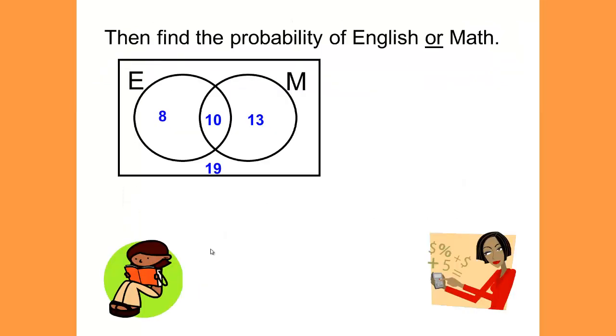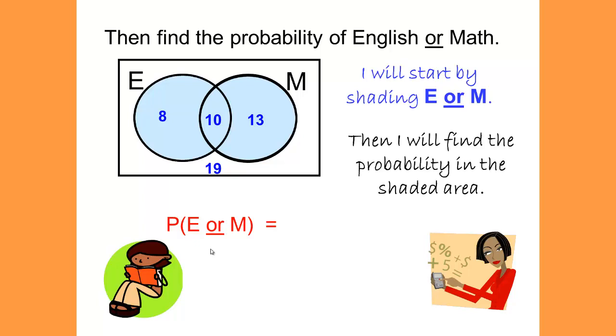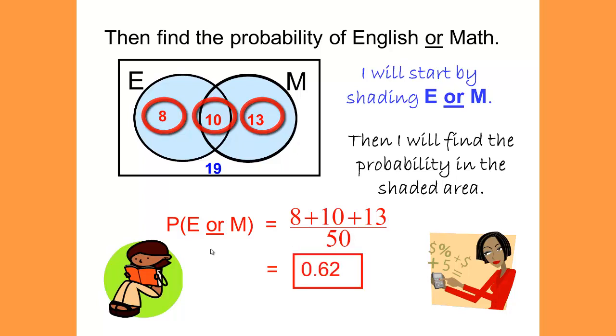With our Venn diagram completed, it's now time to go back and find the probability that we're looking for. We're looking for the probability of English OR math. English OR math is this shaded region here. And we can add those numbers together: 8, 10, and 13, out of the total number of students, which is 50. Do the division on your calculator and that will give you .62.